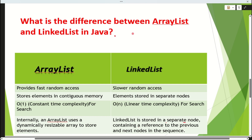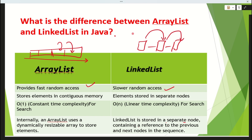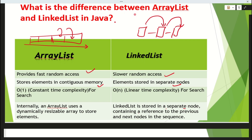The third question is: what is the difference between ArrayList and LinkedList? ArrayList is made up of an array — contiguous memory — so there is fast random access; you can access any block directly. But in a LinkedList, elements are stored in separate nodes, and you have to go from one node to another. So for searching, the time complexity of ArrayList is O(1), but for LinkedList it is O(n). Internally, ArrayList uses a dynamically resizable array.